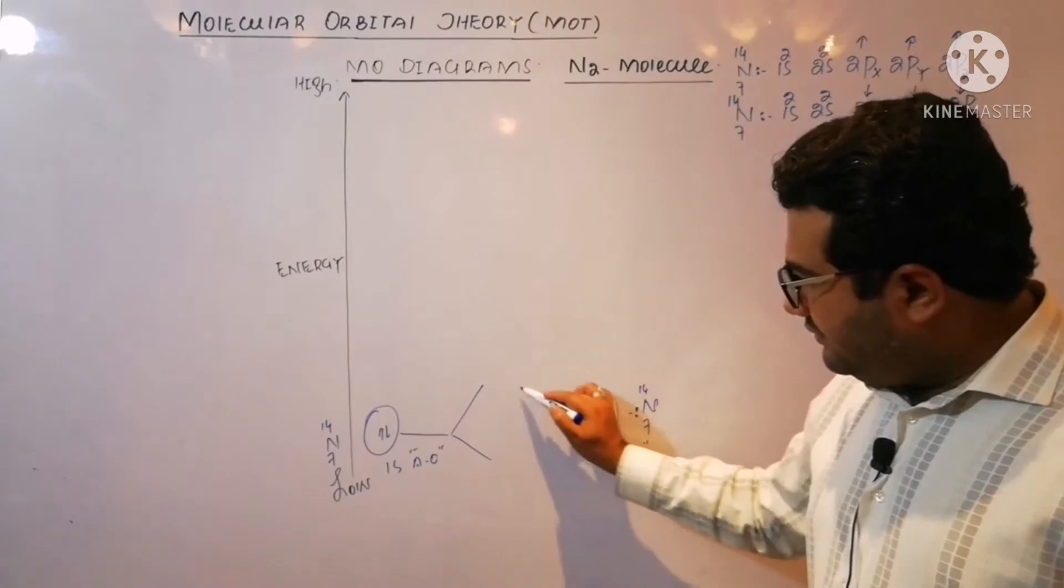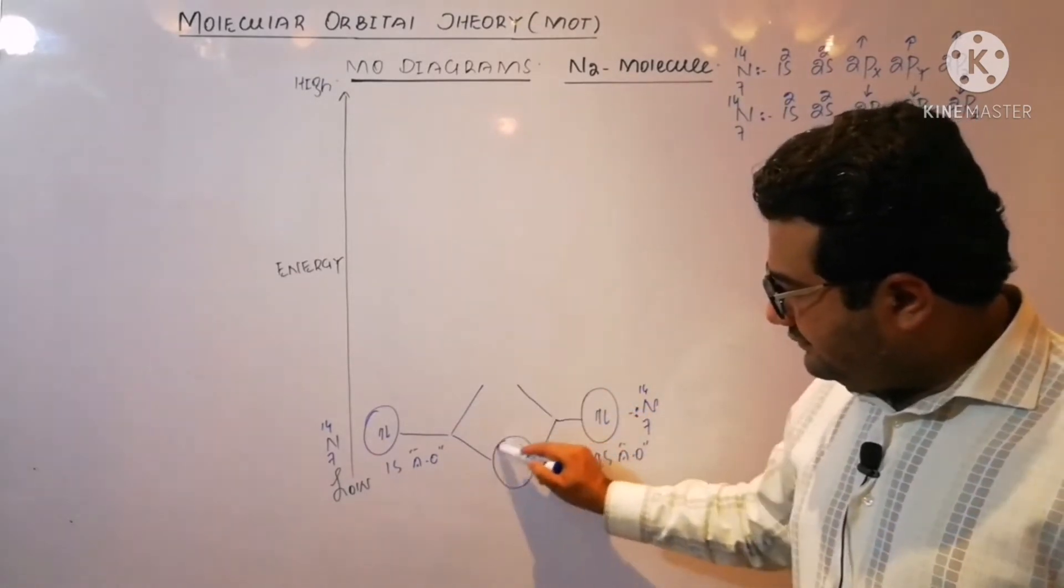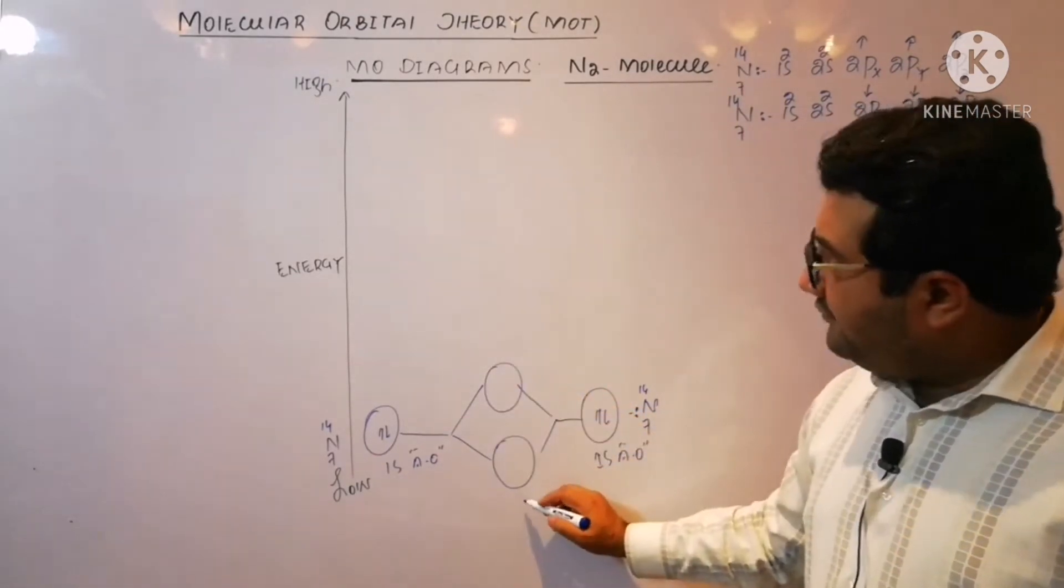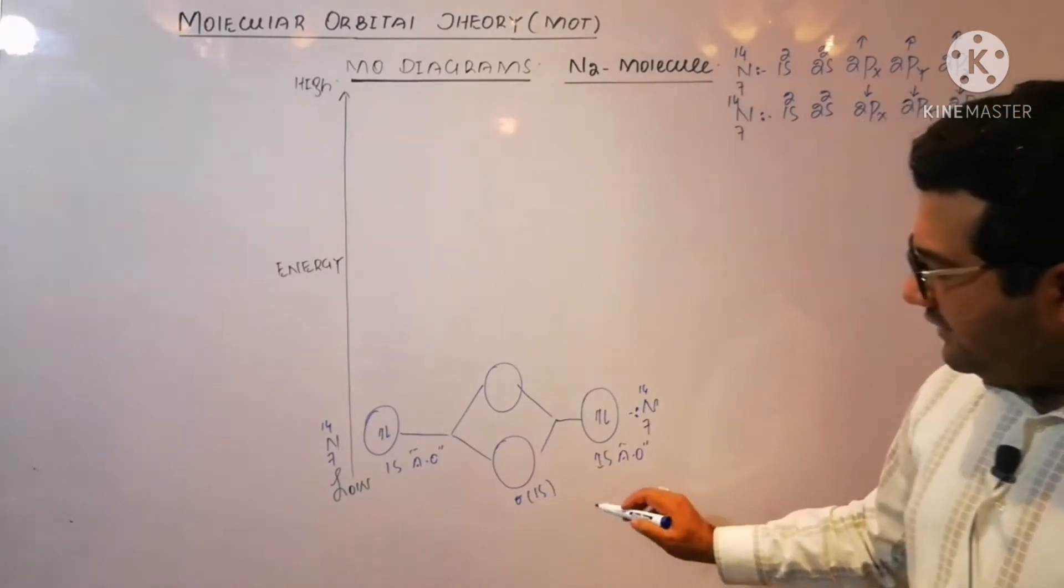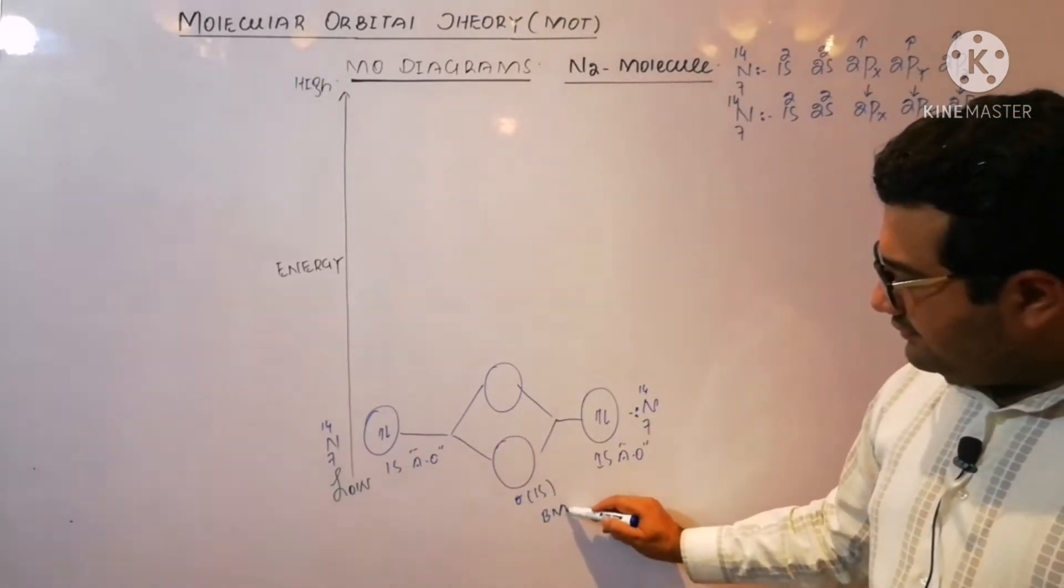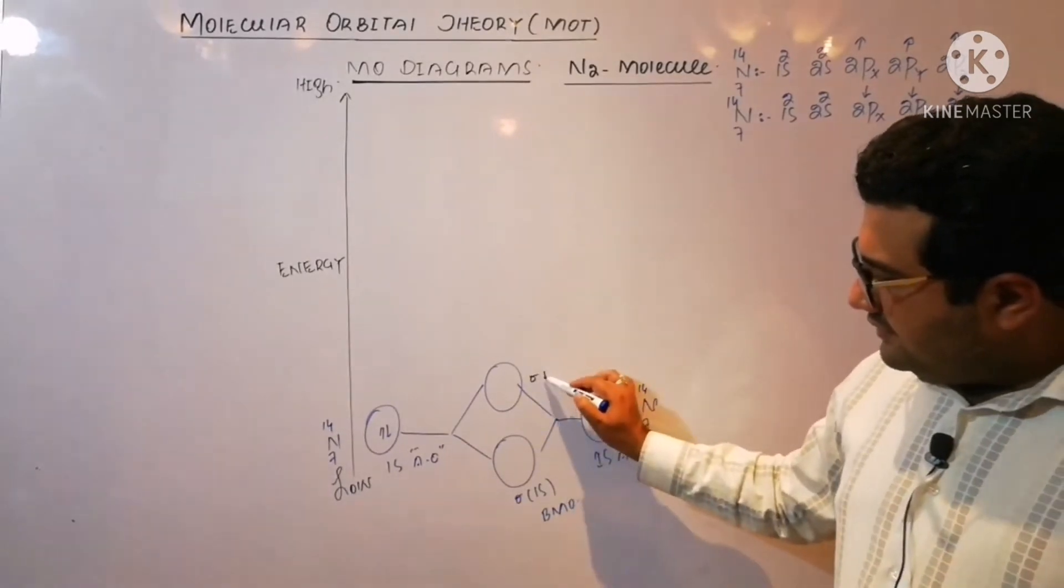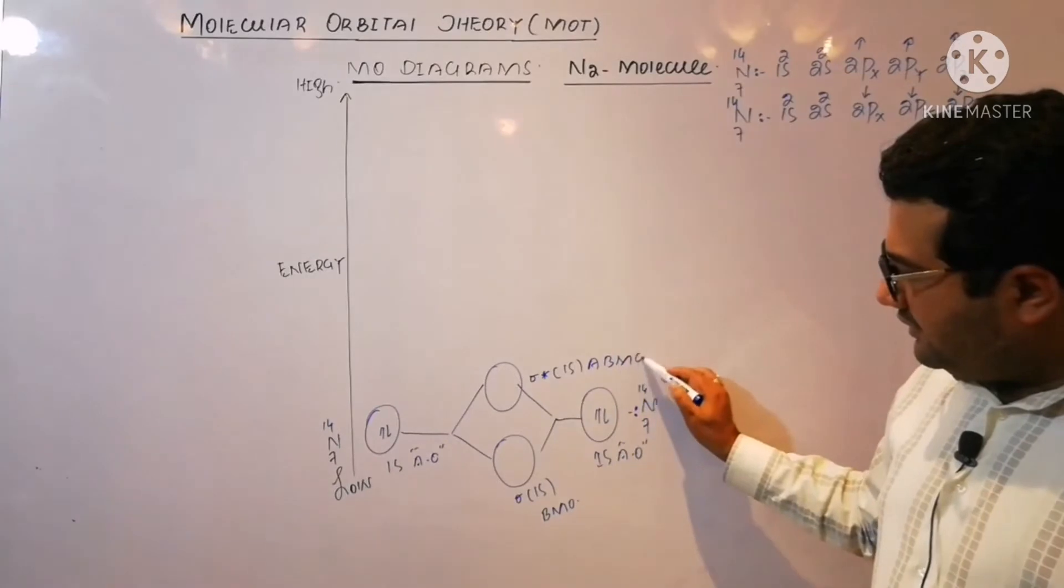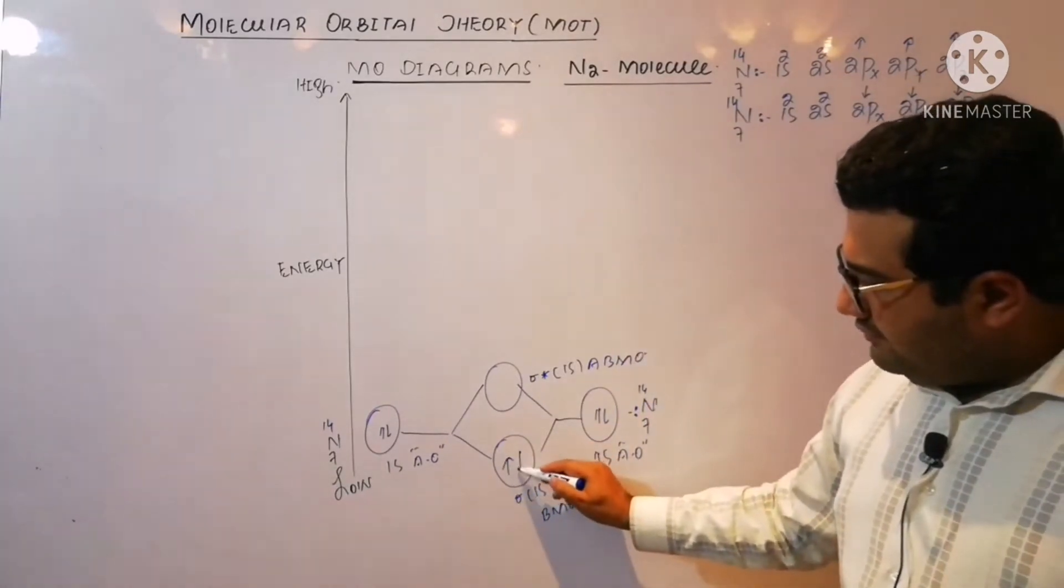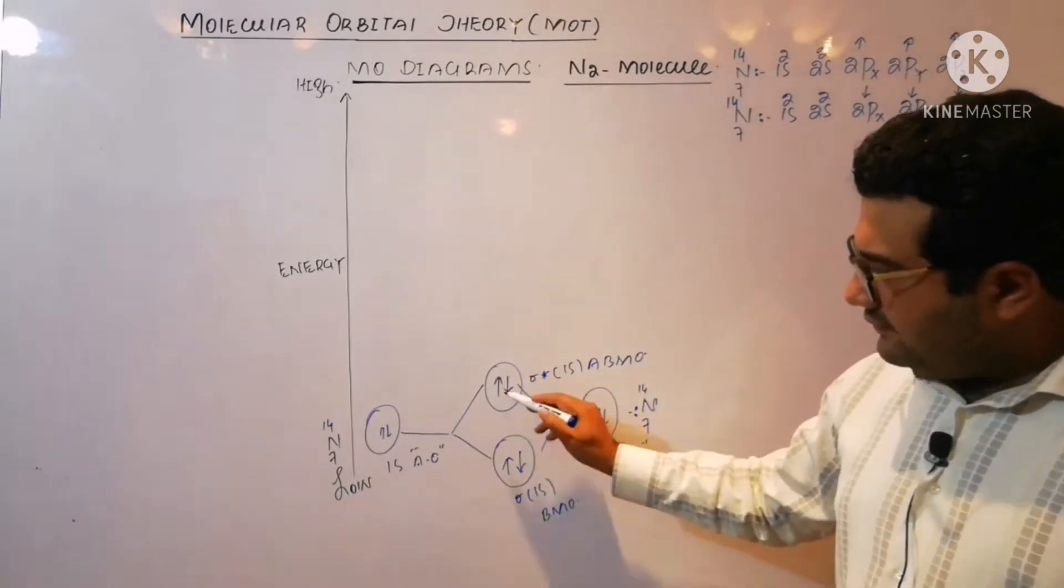They will overlap obviously. There will be sigma 1s bonding molecular orbital, sigma star 1s anti-bonding molecular orbital, and both will be doubly filled.